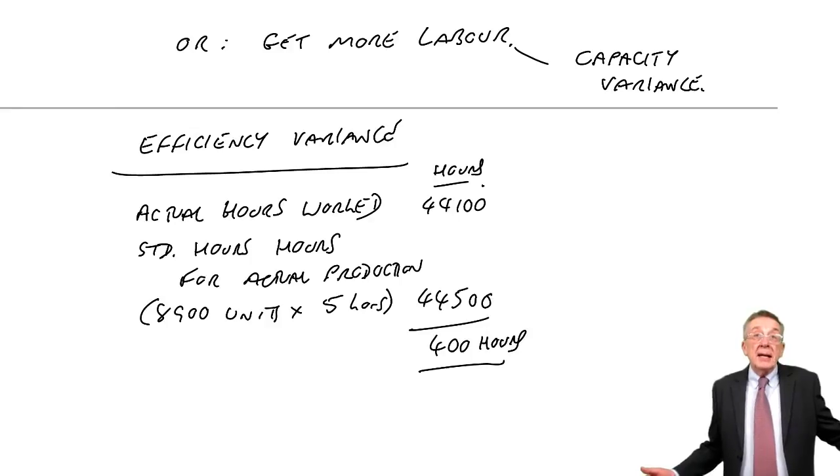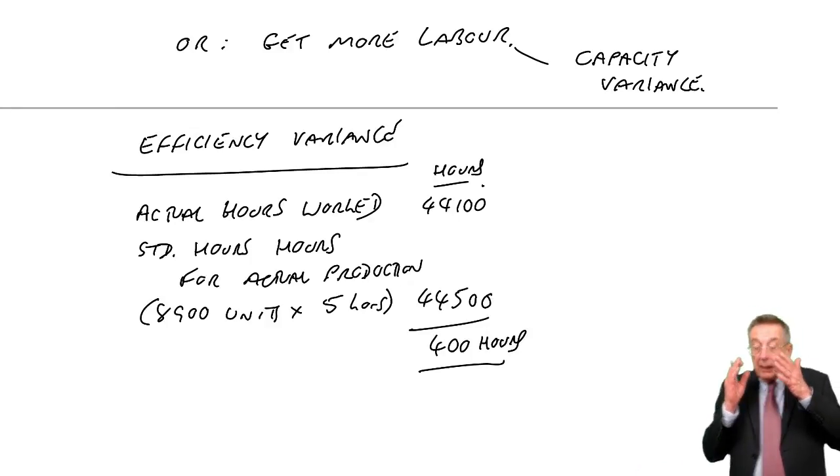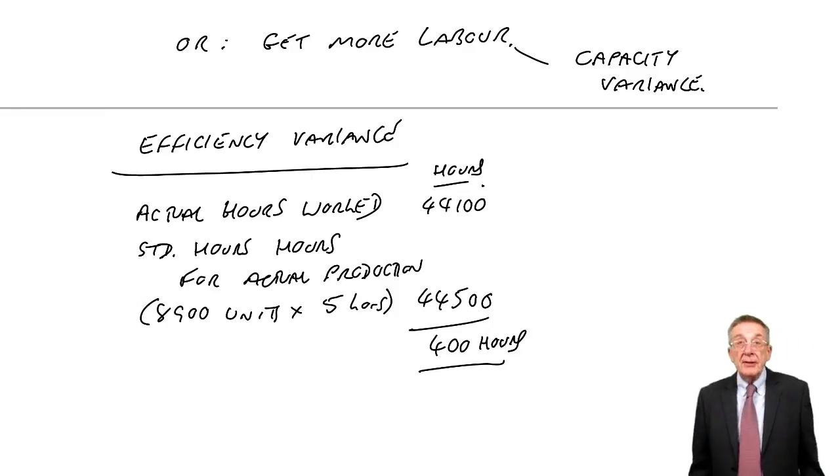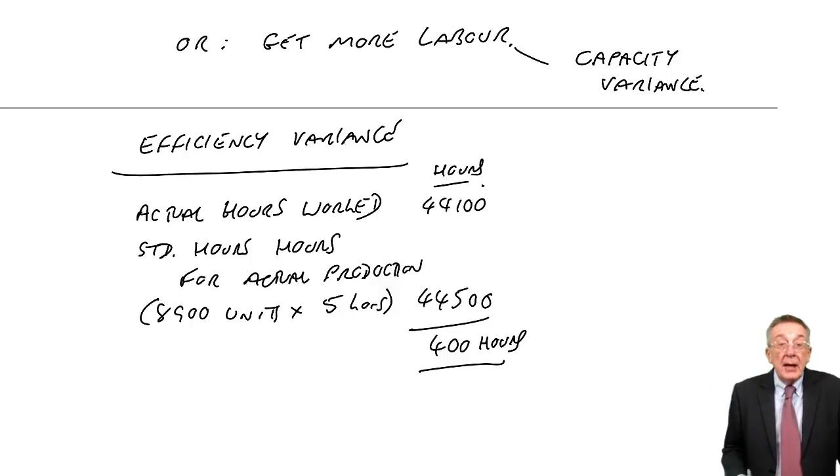To check whether they worked faster or slower, we compare with the standard hours for the actual production. They produced 8,900. This should have taken five hours a unit. And so, they should have worked 44,500 hours. They have worked faster. We've saved 400 hours. And if you do look back later. Labour. We got this saved 400 hours. For labour, it was saving them at $5 an hour. For variable overheads, efficiency variance.